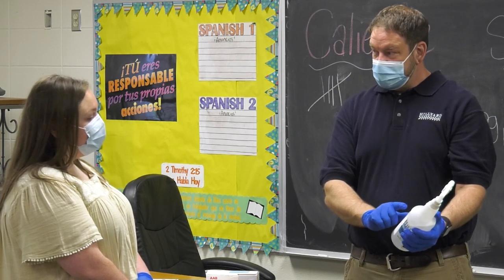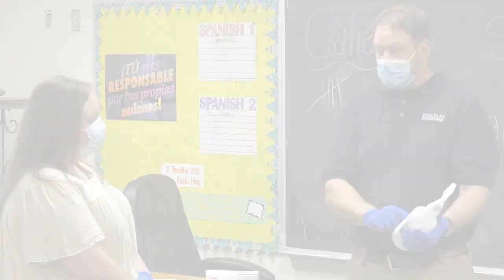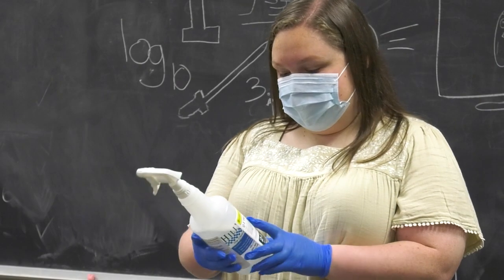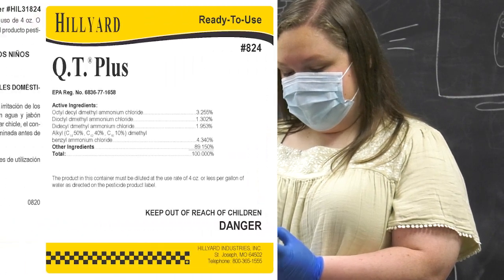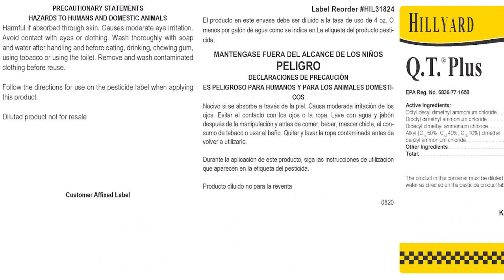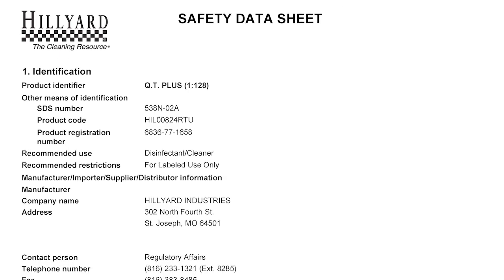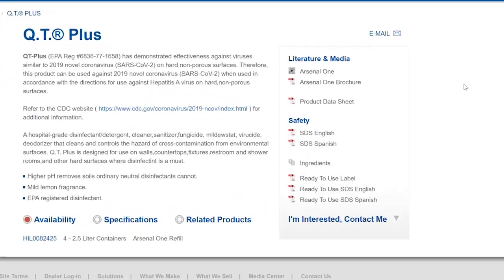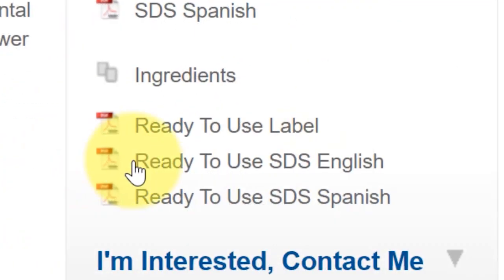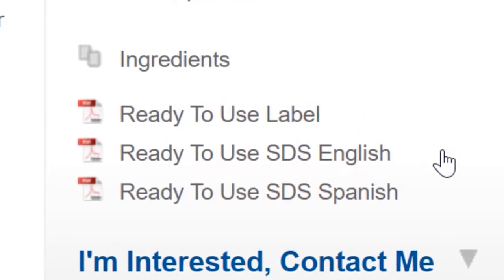Students should not have access to disinfectant products or be assigned disinfection tasks. Before using any cleaning product, make sure you have read and understand the product label and usage directions. Also, you can review Section 8 on product safety data sheets, which outline personal protection precautions and are available for products in their ready-to-use state when diluted through Hilliard Arsenal 1 dispensers.